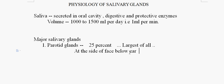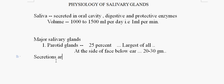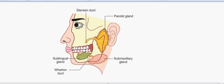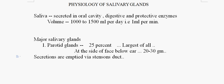The parotid gland weighs about 20 to 30 grams in adults. Its secretions are emptied into the oral cavity through the Stensen's duct, which we can see in the picture running from the parotid gland into the oral cavity.